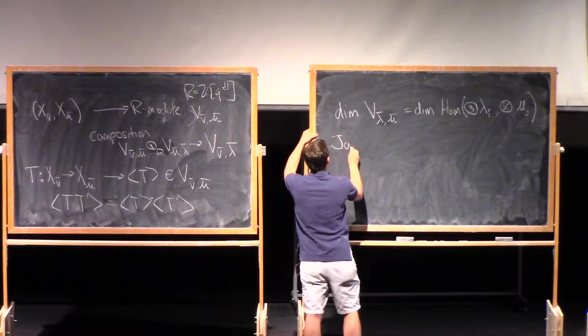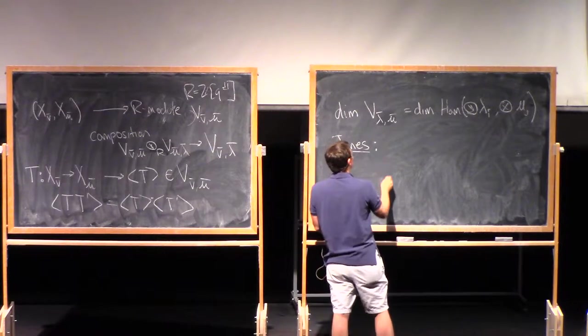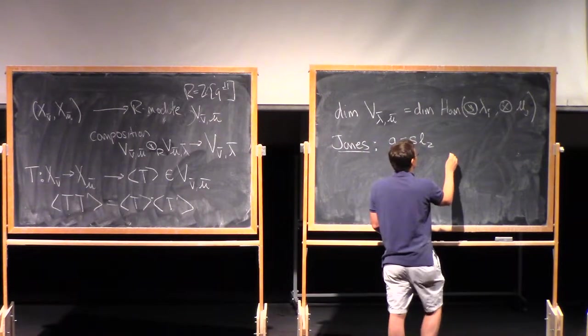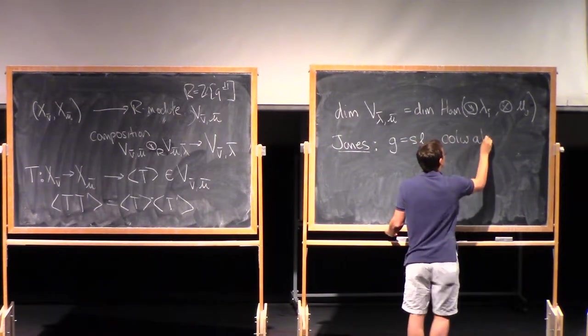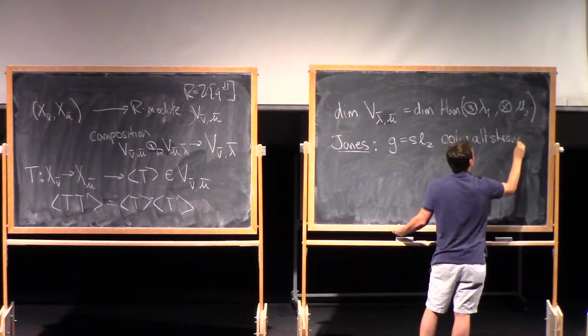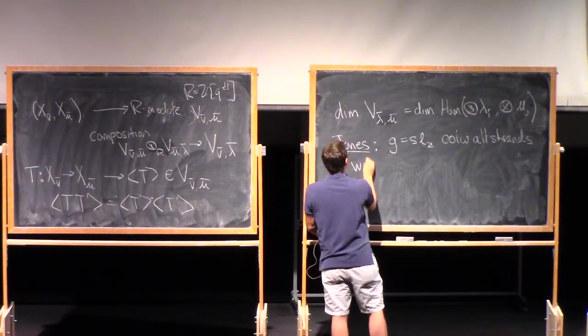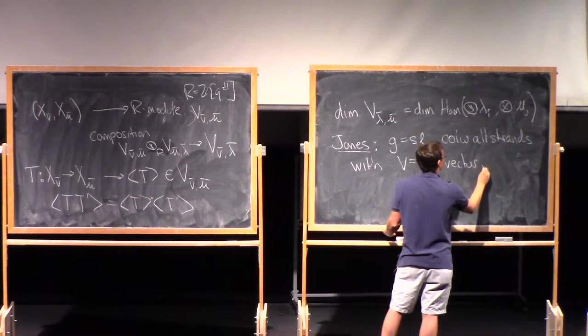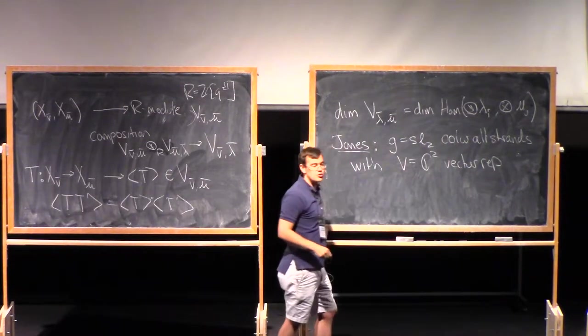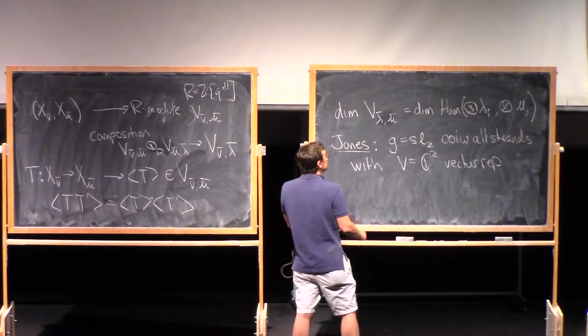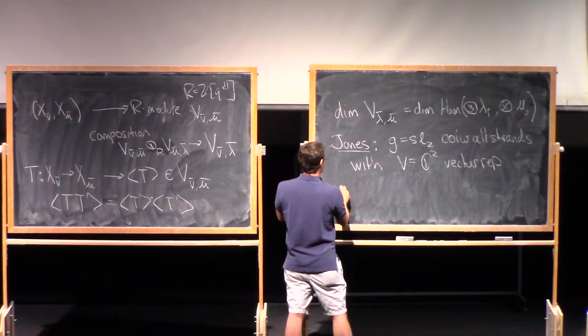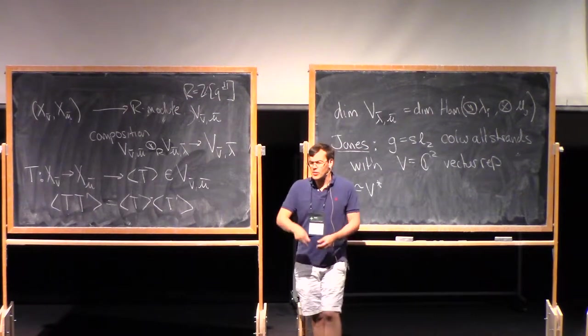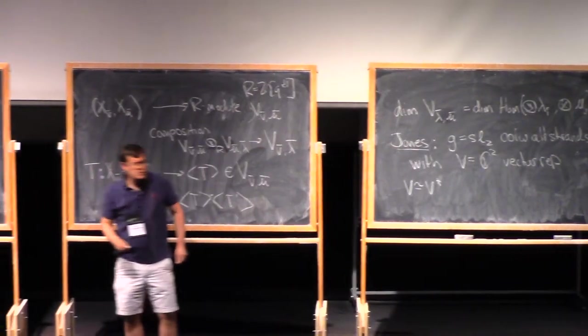So what is the Jones polynomial? Jones polynomial and the Kauffman bracket correspond to taking little g as SL2, simplest interesting algebra, and I color all strands with the same representation, v, which is C2, this is the vector representation of SL2. And then, so in particular, I see that v is isomorphic to v-dual. That's why the Jones polynomial doesn't really care about the orientation on these strands.